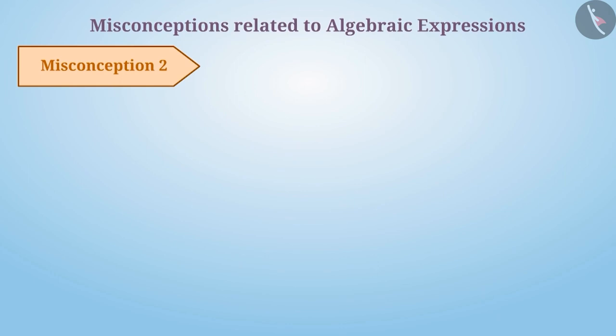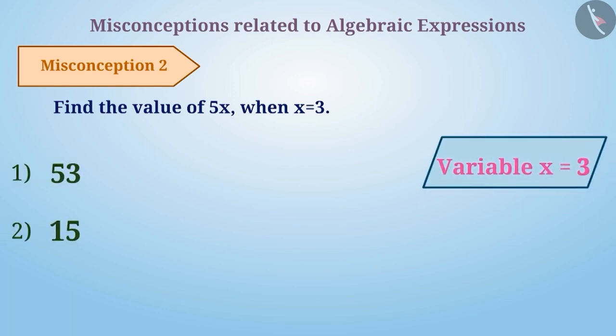Misconception 2. Find the value of 5x where x is equal to 3. While obtaining the value of an expression when the value of the variable is known, often the variable is replaced with its value. By doing so, the answer 53 is obtained, which is the wrong answer.